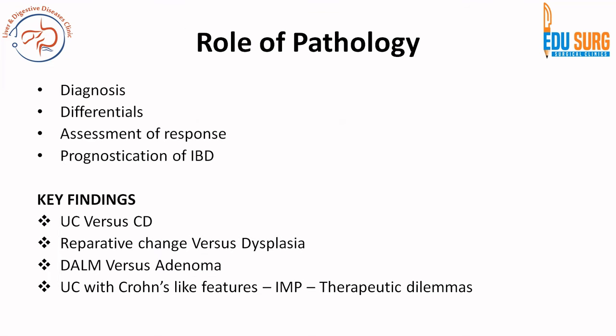So we have seen the role of pathology in terms of key findings: ulcerative colitis versus Crohn's disease — macroscopic and microscopic features; the difference between reparative change and dysplasia; key points to differentiate DALM from adenoma; and the five different presentations of ulcerative colitis with Crohn's-like features.